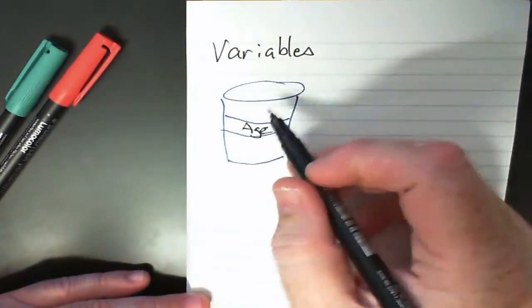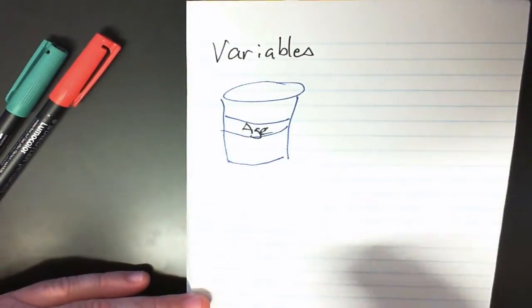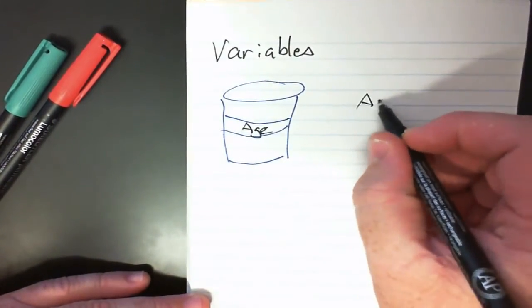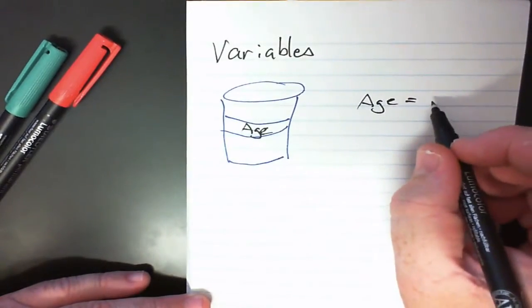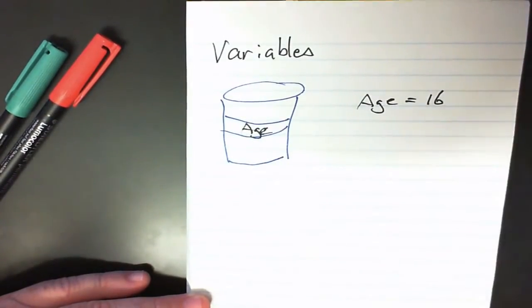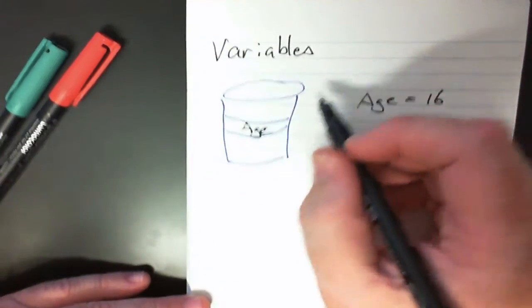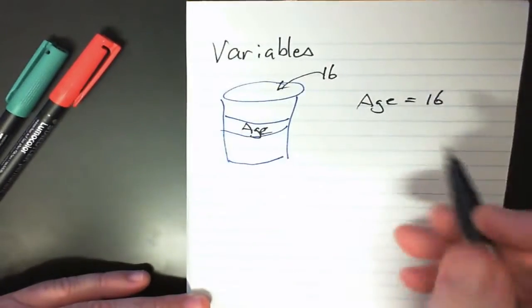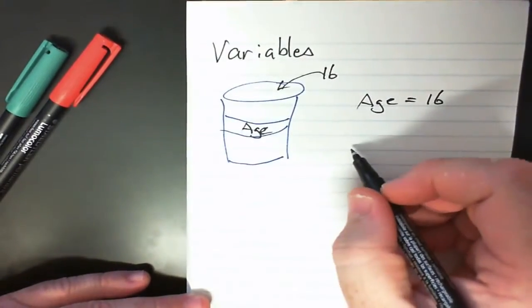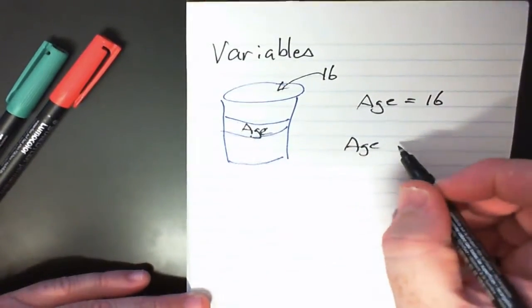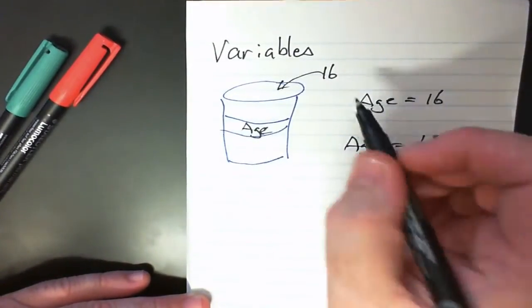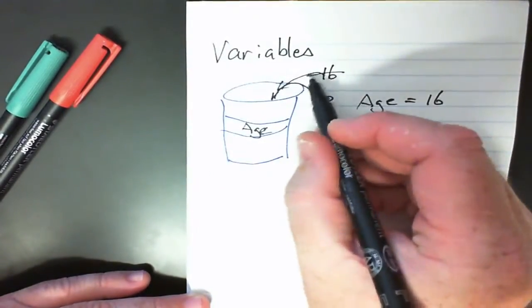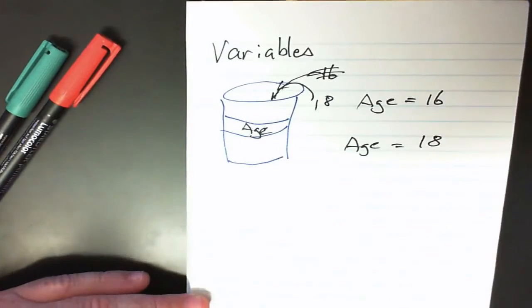So in Visual Basic for example, we could actually say that age is equal to 16, and what will happen is that 16 is then placed into the bucket. So 16 is put into the age bucket. If I put another age in there and say age is equal to 18, then 18 is placed into the bucket and 16 is lost. So buckets can only hold one object at a time, so you need to be very careful about what you're putting into the bucket.